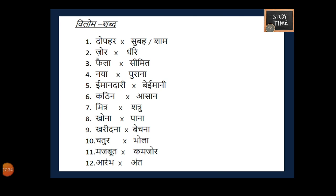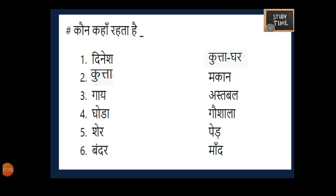Next, Kaun kahan rehta hai — match the left column A with column B. You are going to match the animal or being with the place where they live.